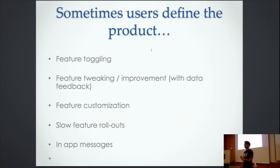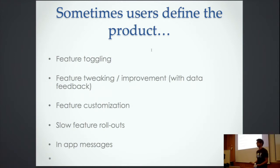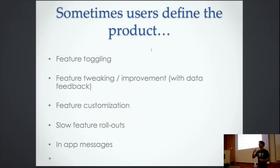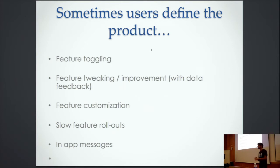We figured out whether things were working; if not, we'd go back and optimize the algorithm. Basically, we don't have to expose 100% of our users to something we're not sure about. Another unexpected use was in-app messaging — product managers started using it for messages like Christmas promotions. They go to the UI, change the copy, run it for a week, and don't have to say anything to the developers. They can choose whatever country they want to show the message in.